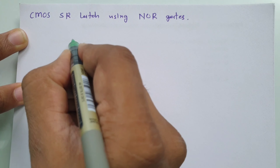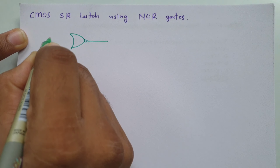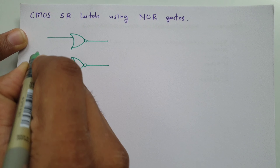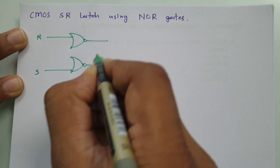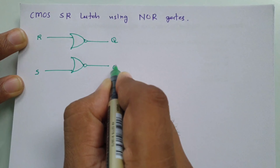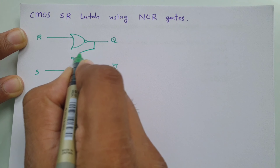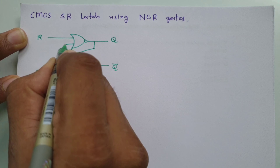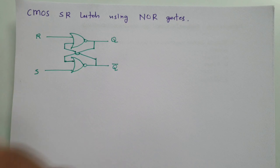When we talk about SR Latch using NOR gate, there are two NOR gates in its structure. The first NOR gate and the second NOR gate. Input R is given to the first and input S to the second, and the outputs are Q and Q-bar. The output of each NOR gate is fed back as input to the other NOR gate.